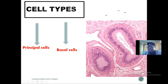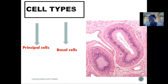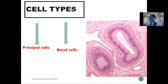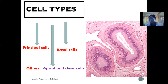The second type of cell are the basal cells, which — from the name basal — are seen close to the basement membrane. These cells do not present any secretory property. These are the two major types of cells in the epididymis. We also have some region-based cells, as the epididymis is made up of the head, the body, and the tail, so these cells are specifically located in specific regions. These include the apical cells and the clear cells.